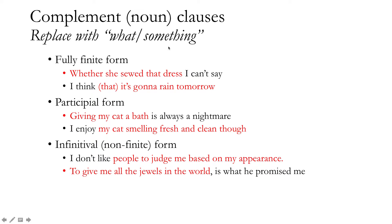These three clause types each have a range of forms performing the same function. For complement clauses, there's a fully finite form: 'Whether she sewed that dress, I can't say' or 'I think that it's going to rain tomorrow' — nearly a full sentence with subject, verb, and time marking. There are also participial forms: 'Giving my cat a bath is always a nightmare' — sometimes called a gerund clause. And 'I enjoy my cat smelling fresh and clean' — 'my cat smelling fresh and clean' is a gerund clause using the verb-ing participial form.